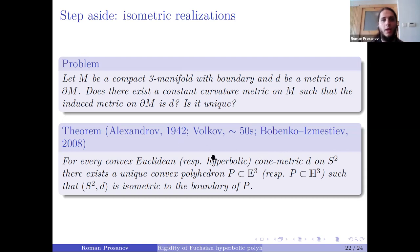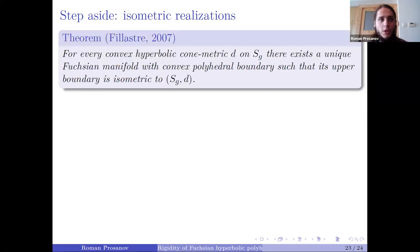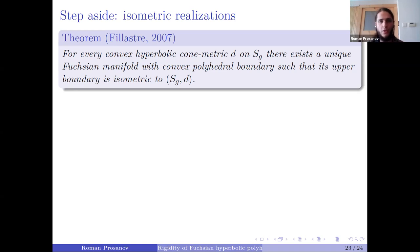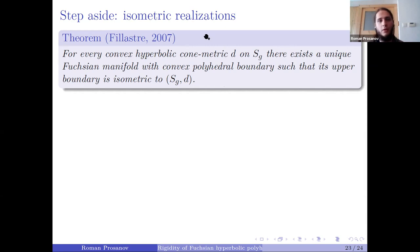This problem has a generalization to higher genus: a theorem of François Fillastre, a student of Jean-Marc Schlenker, which proves that every convex hyperbolic con metric can be uniquely isometrically realized in a Fuchsian manifold. Fuchsian manifolds are a very traditional and convenient choice for isometric realization problems of hyperbolic metrics on surfaces of higher genus, proposed by Pogorelov and by Gromov-Stoichow examples. The smooth counterpart of this theorem was provided by works of Jean-Marc Schlenker.